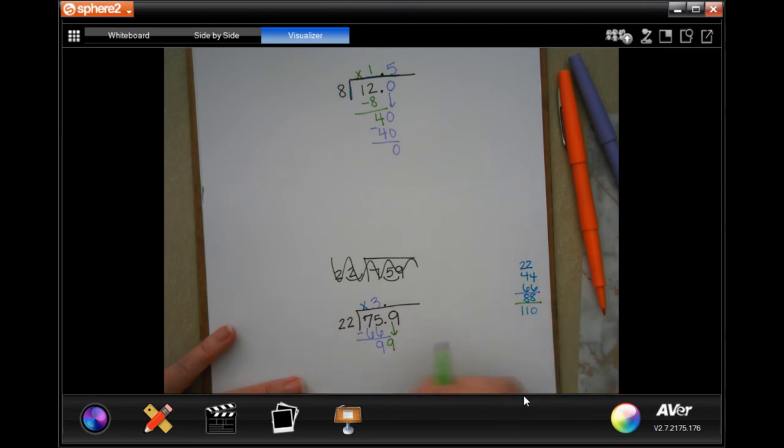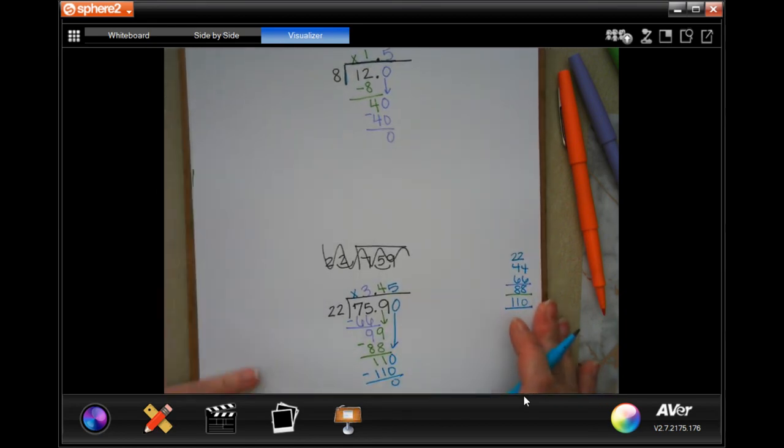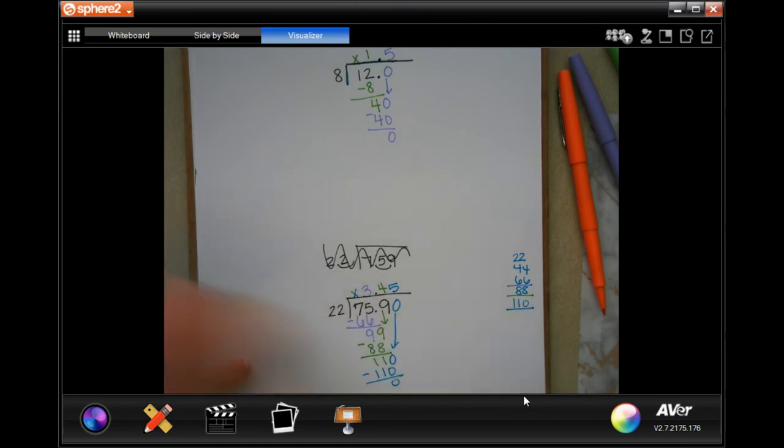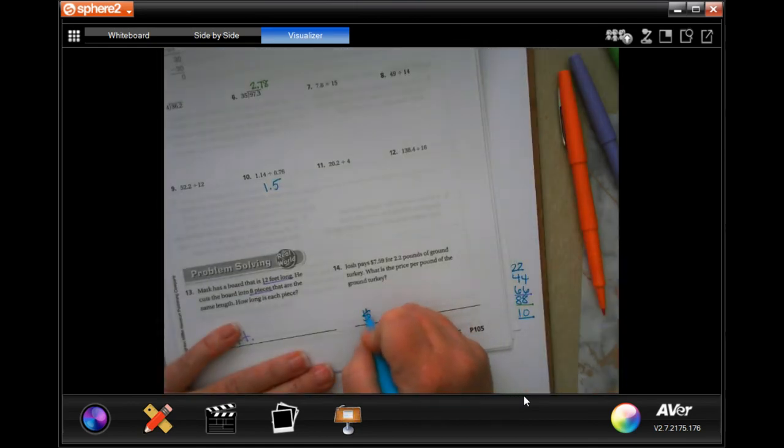22 is going to go into 99. 88 is as close as we can get. So that's 4 times. 4 times 22 is 88. Subtract. Get 11. Now, because I have that decimal there, I can add a 0 and bring it down. 22 goes into 110 five times.